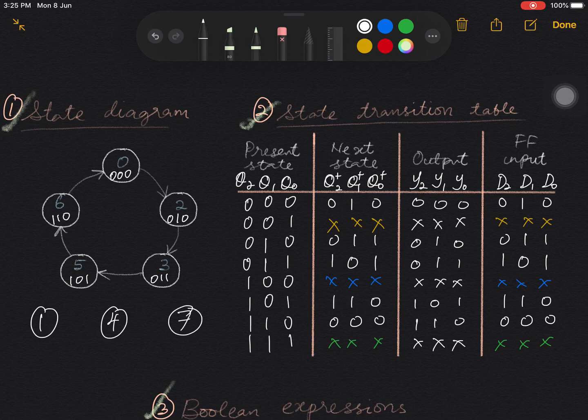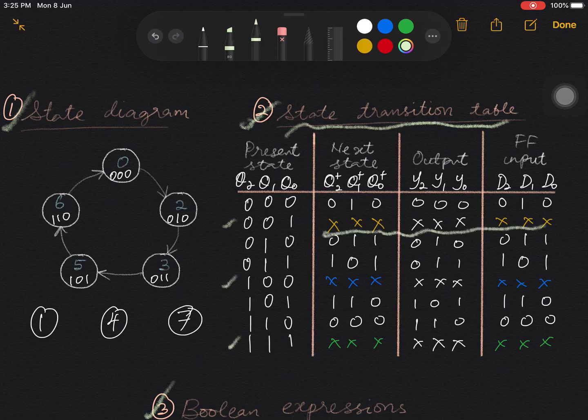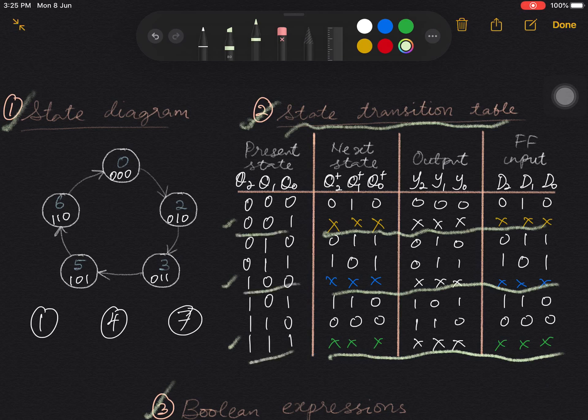So now we bring our focus on the state transition table. Here are three rows, 1, 2, and 3, that are filled with don't cares, as can be seen here. All are don't cares. So these don't cares correspond to the unused states 1, 4, and 7.